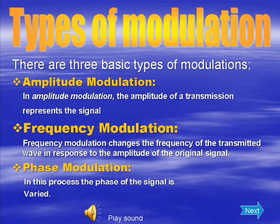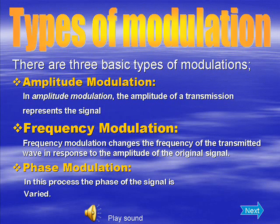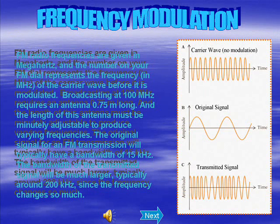In amplitude modulation, the carrier wave has a frequency in the kilohertz range. For example, 600 on the AM dial is 600 kilohertz, so the antenna needs to be only 125 meters long. The initial signal is raised until it is completely positive, and then this positive version of the signal is used as an envelope that determines the amplitude of the transmitted wave.